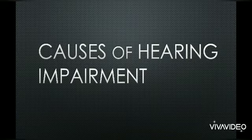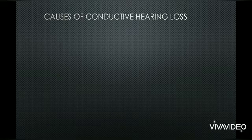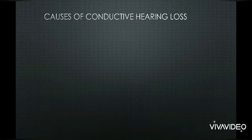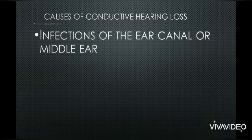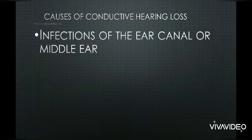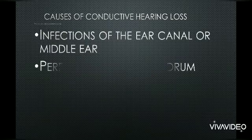The first type is conductive hearing loss. Since conductive hearing loss involves the middle ear and outer ear, all causes here relate to problems in those areas. The first cause is infections — if there is any kind of infection in the ear canal, which is the outer ear, or in the middle ear, it can cause conductive hearing loss.